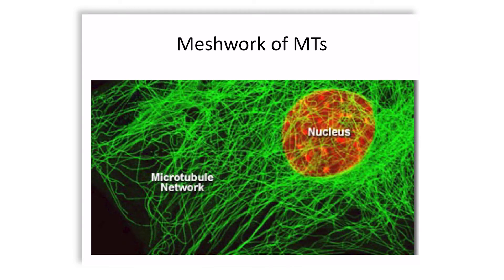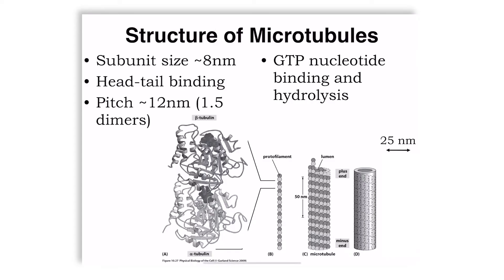We're going to talk about actin, microtubules, and intermediate filaments, the third of these canonical cytoskeleton elements. What you see is a meshwork of microtubules with a nucleus in the center. It's made up of an alpha-beta tubulin subunit, which forms a protofilament in a sort of head-to-tail fashion. These protofilaments form a circle, a cylinder.